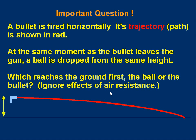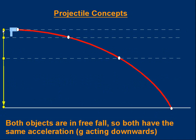The answer is they reach the ground together. Intuition says the ball should reach the ground first, but that's wrong. Just because the bullet has moved a long way doesn't mean it's been in the air longer. Here's a better diagram — there's the ball being released and the bullet leaving the gun. If we could watch these, they would fall together at the same height, and then reach the ground at the same time. Both objects are in free fall, meaning only gravity acts on them, so both have the same acceleration G acting downwards.